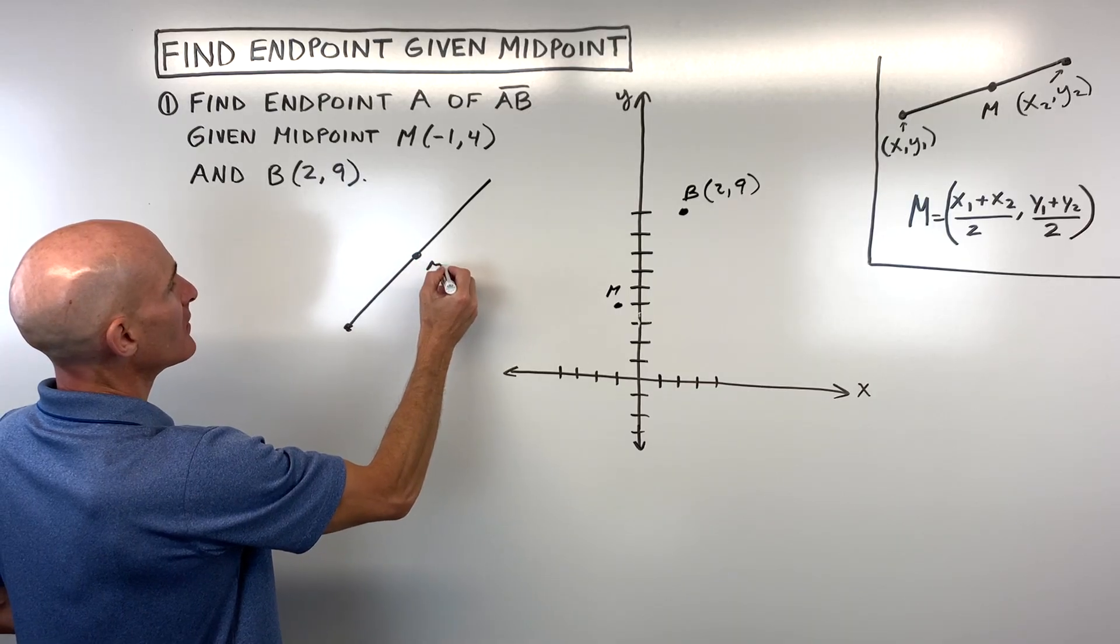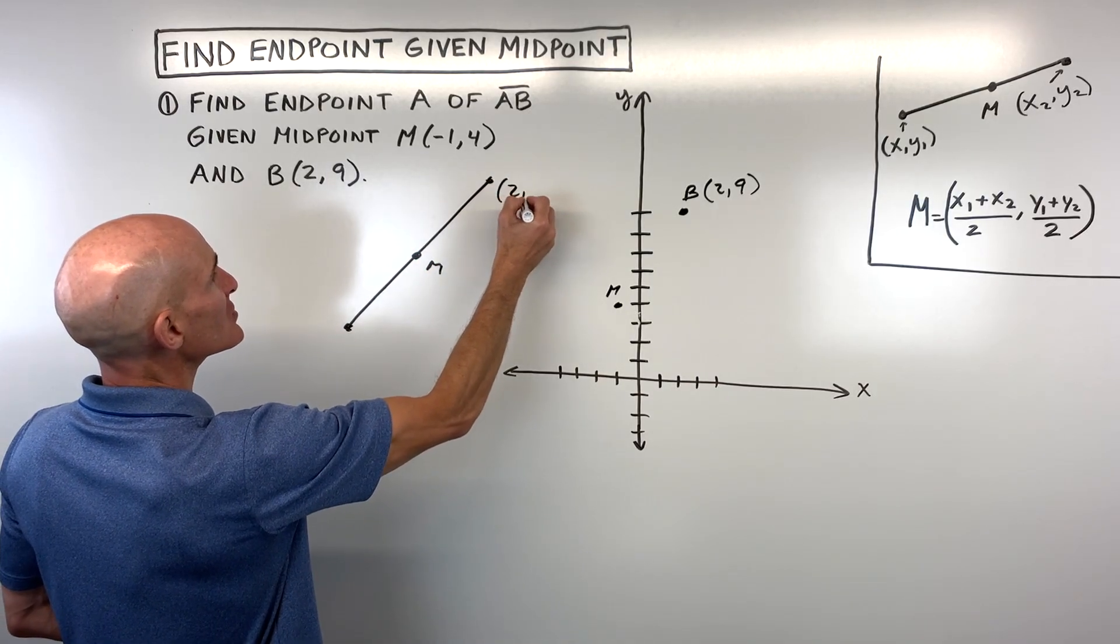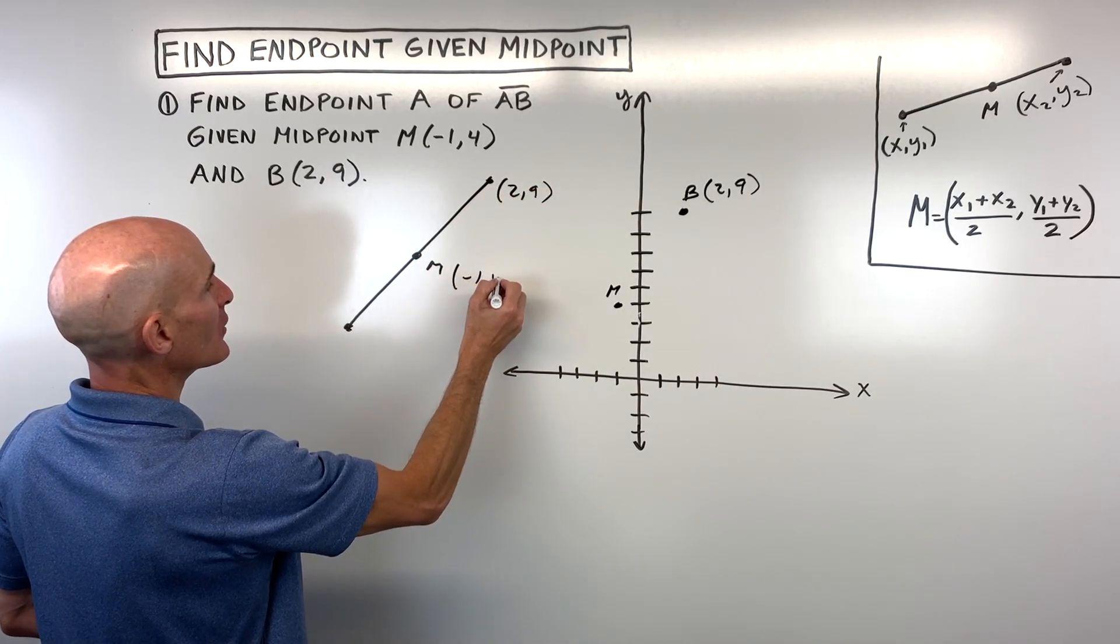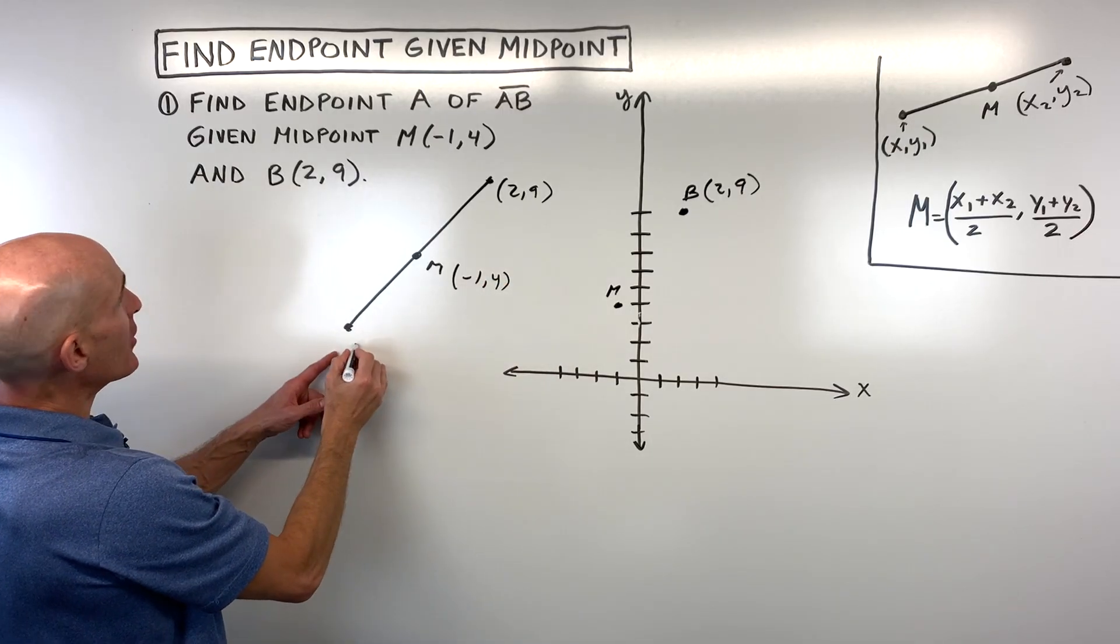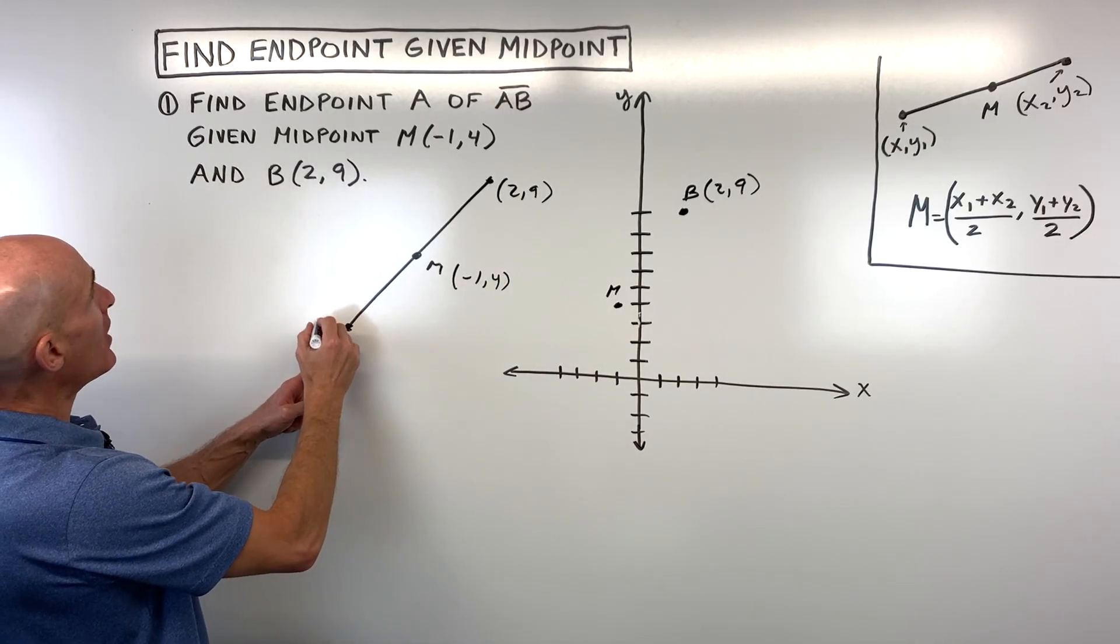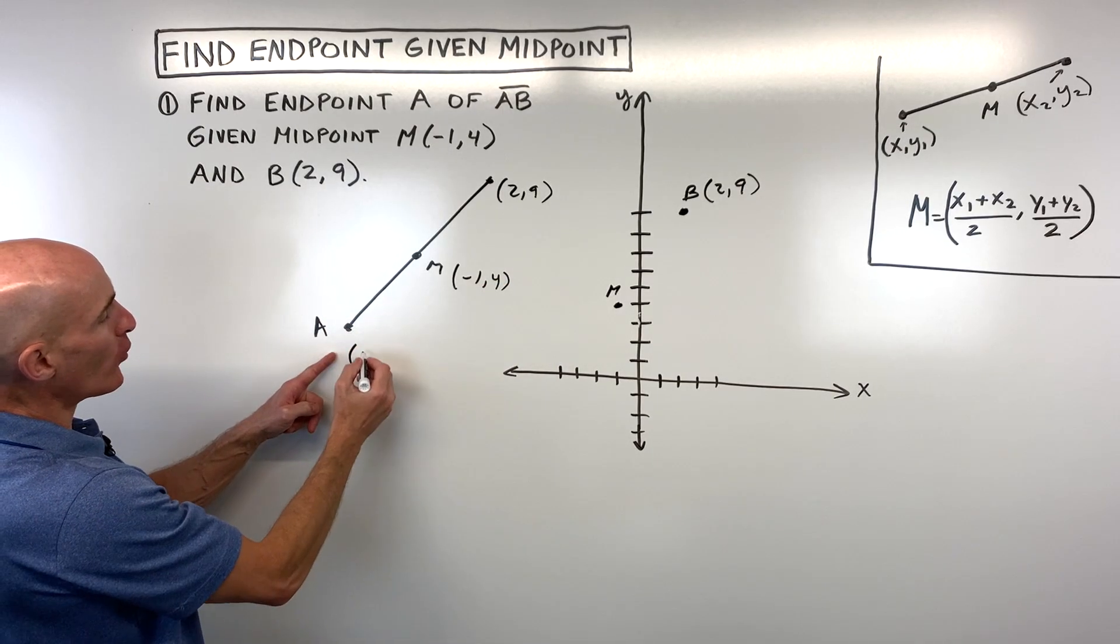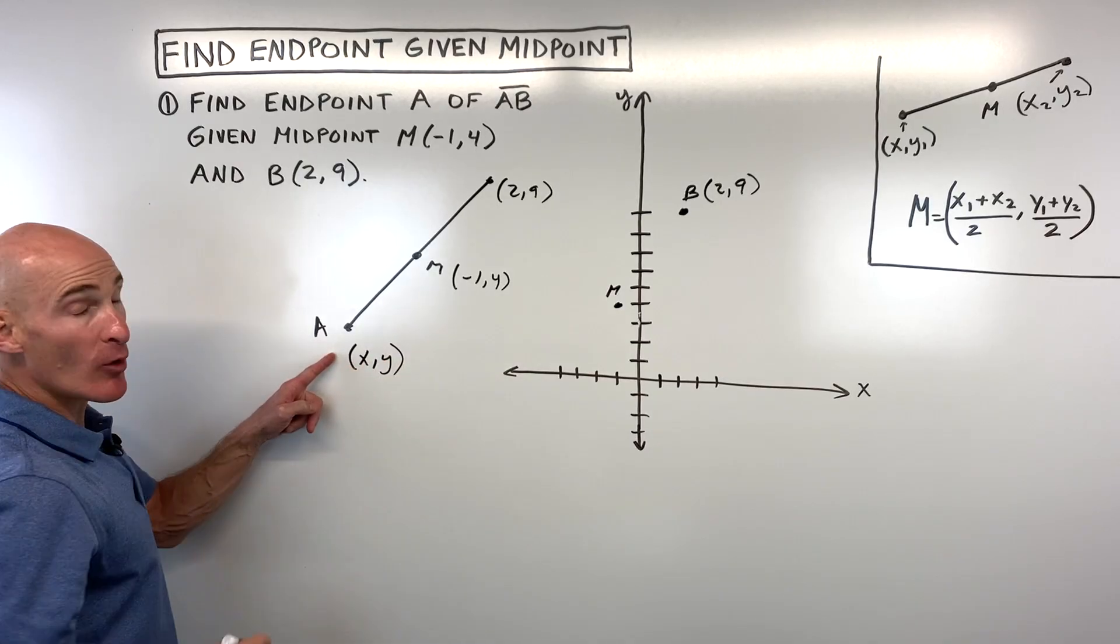So you've got a midpoint, you've got your endpoint which is two, nine, midpoint negative one, four. And then you have this other point here which we don't know. This is point A, which is what we're trying to solve for. Let's just call it X comma Y, because we don't know the X coordinate and the Y coordinate.